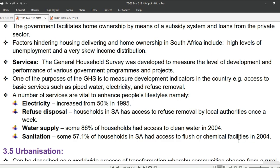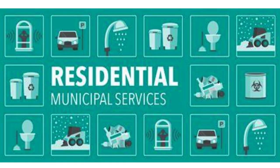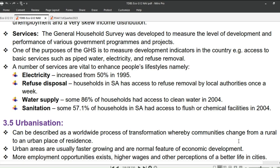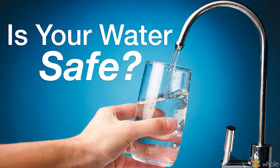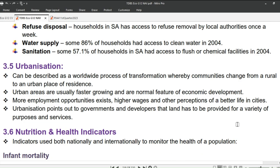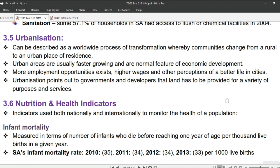Up next is services. The General Household Survey was developed to measure the level of development and performance of various government programs and projects. One of its purposes is to measure development indicators such as access to basic services like piped water, electricity, and refuse removal. Key services include: electricity, which increased from 50% in 1995; refuse disposal, where households have access to removal by local authorities once a week; water supply, with some 86% of households having access to clean water in 2004; and sanitation, where 57.1% of households had access to flush or chemical facilities in 2004.